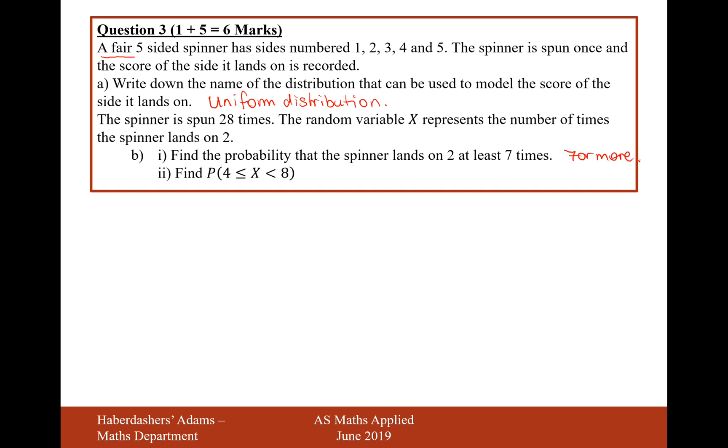So what we first need to state here is the type of distribution we're working with. x is binomially distributed with a number of trials of 28, where each trial has a success of landing on the number 2 of 0.2. That's 1 in 5.